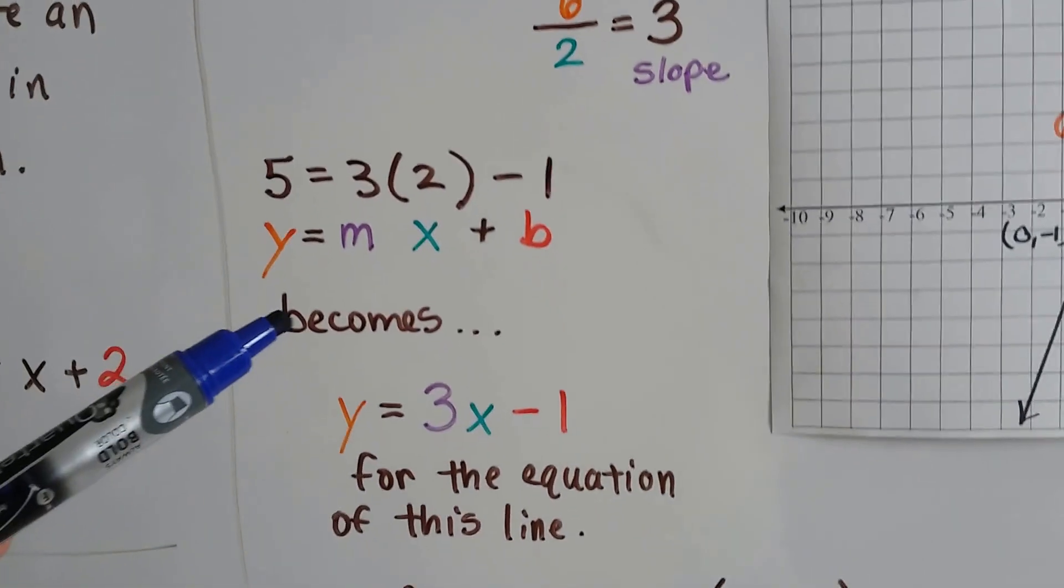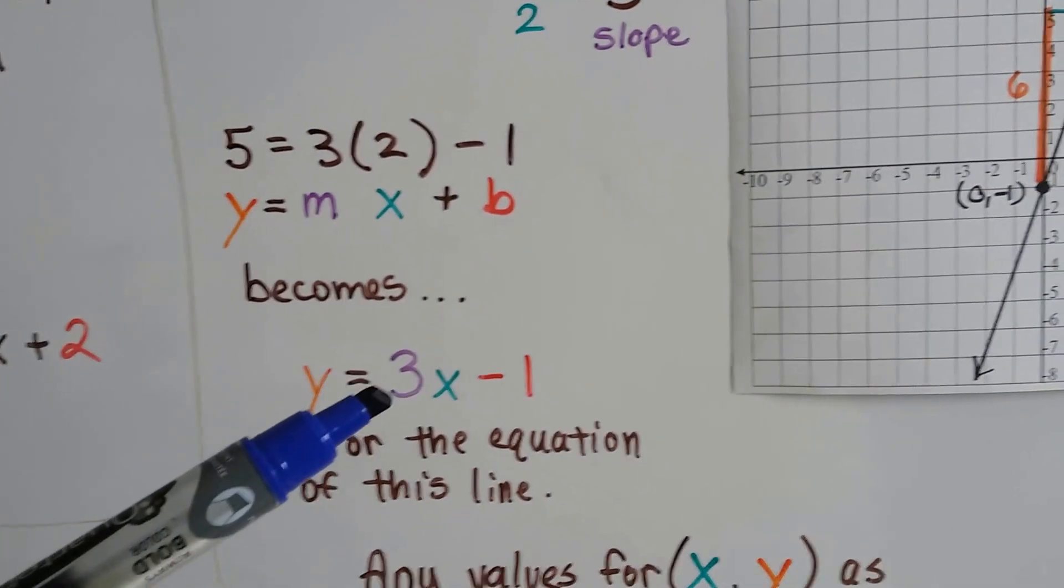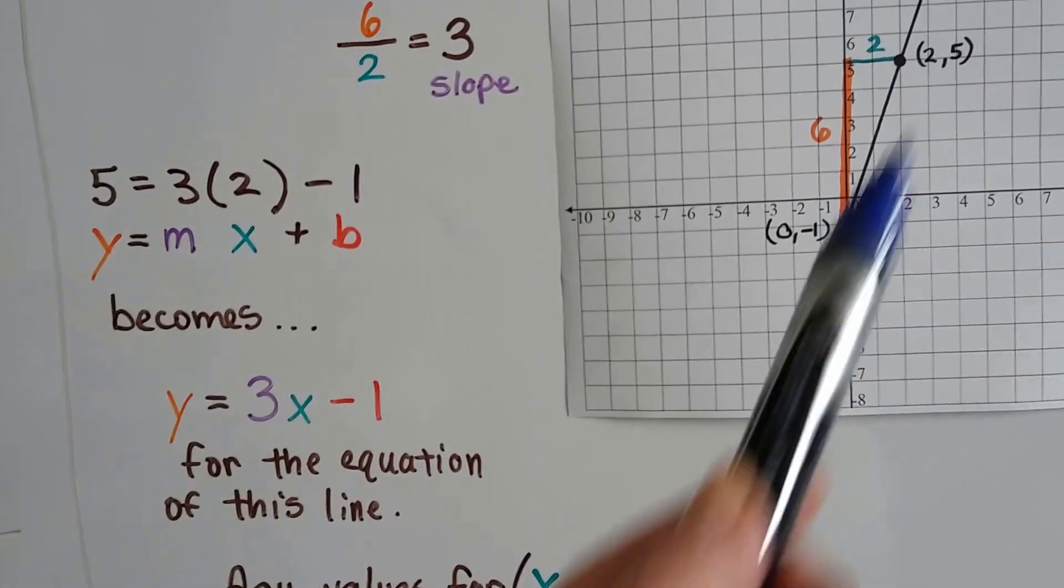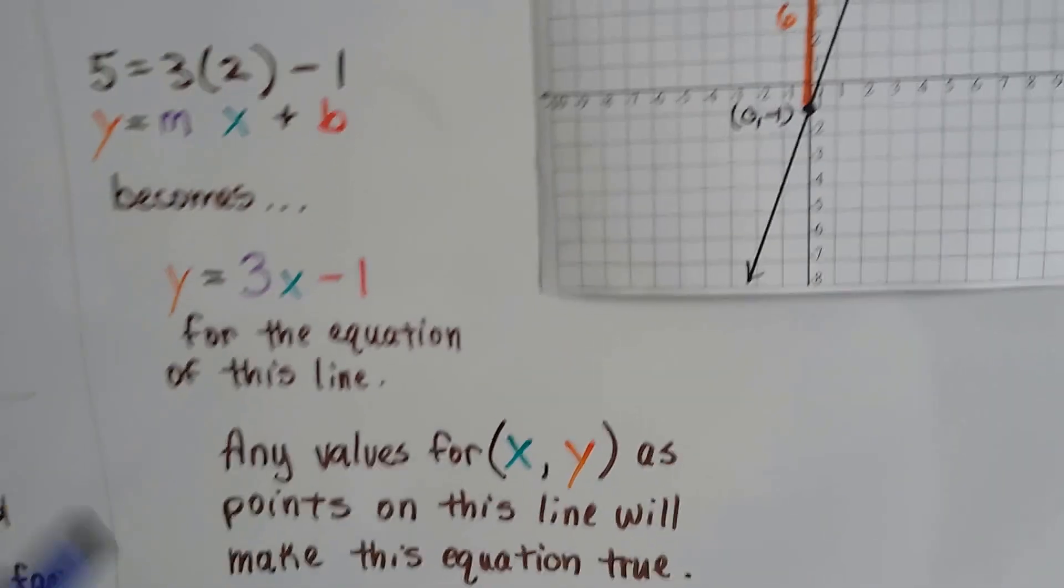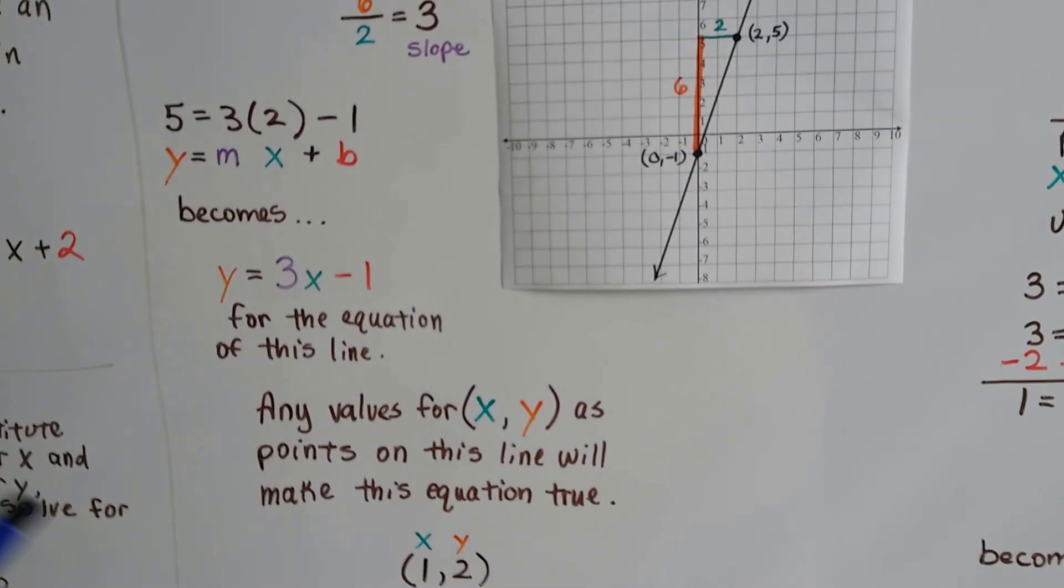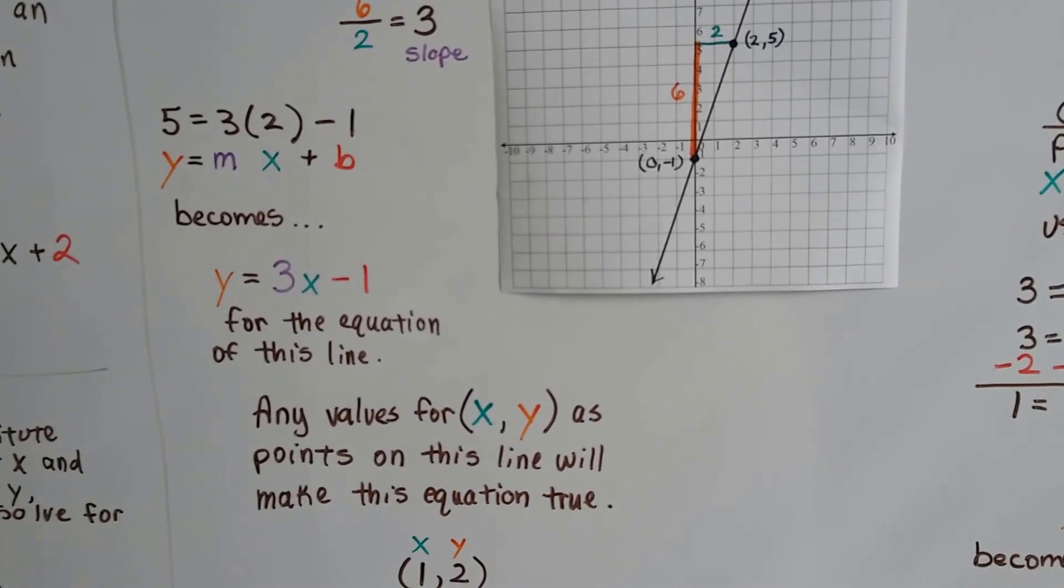And it becomes y equals 3x minus 1, and that's the equation of this line. For any values of x and y that we choose as points on this line, it'll make that equation true.